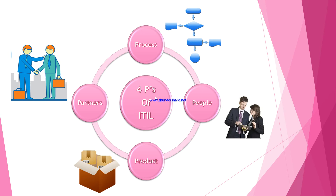After executing a particular process, at the end of the process, what you get is the Product. The product is the result generated out of the process. So these are the four P's: Process, People, Partners, and the result of the process — the Product.